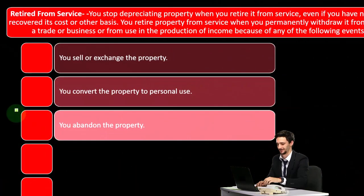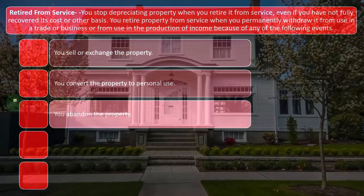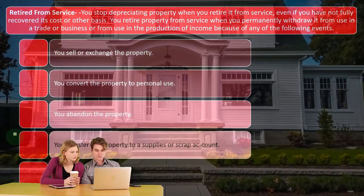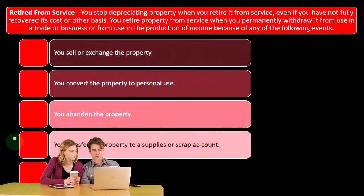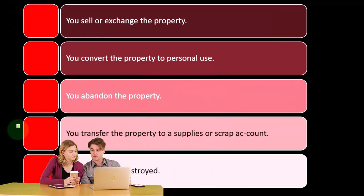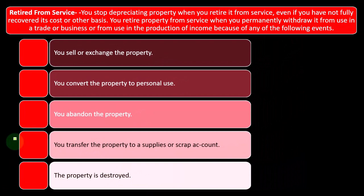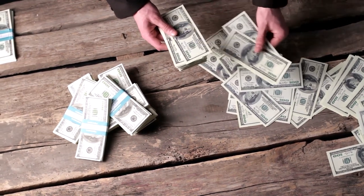If you abandon the property — just leave it — if it's real estate that's usually what comes to mind with abandoned property, or you abandon a forklift somewhere. You transfer the property to a supplies or scrap account, so you're accounting for it as just scrap now as opposed to a piece of equipment — it's not a forklift anymore, it's a hunk of metal. Or the property is destroyed, in which case it's gone.